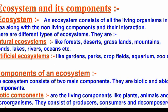Ecosystems can be natural or artificial. Natural ecosystems include forest, desert, grassland, mountains, ponds, lakes, rivers, and oceans. These contain living things like animals, plants, and water organisms.